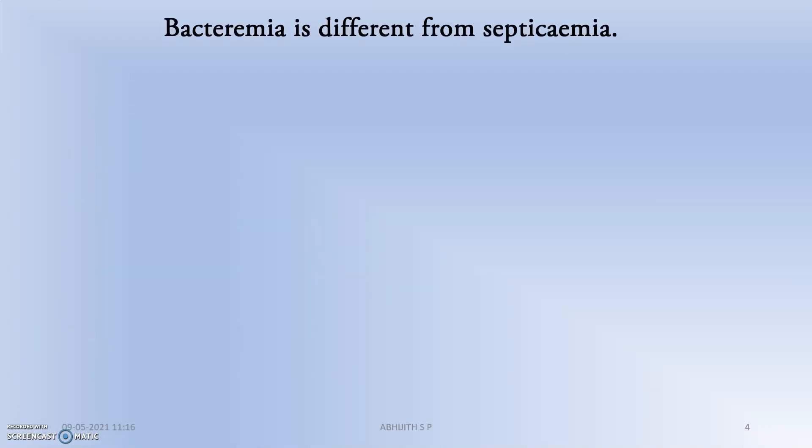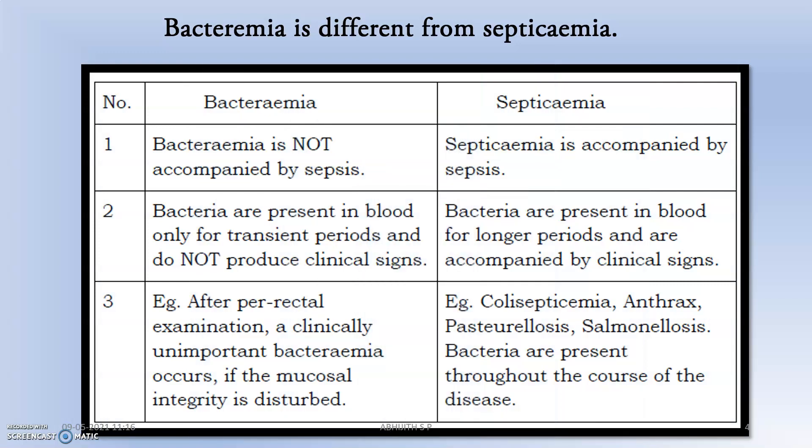Bacteremia is different from septicemia — there are many points of differentiation. Bacteremia is not accompanied by sepsis, whereas septicemia is always accompanied by sepsis. Septic shock is very common in septicemia, but not in bacteremia. In bacteremia, bacteria are present in the blood only for transient periods and do not produce clinical signs. In septicemia, bacteria are present in the blood for a longer period and are accompanied by clinical signs.